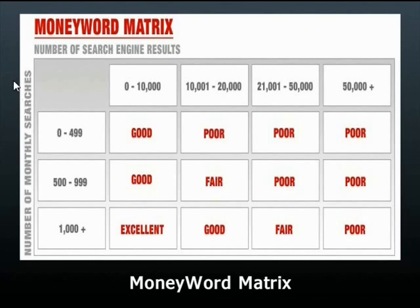If we look over here on the left, we have the number of monthly searches: 0 to 499, 500 to 999, and 1,000 plus. If we look up here at the top, this is the number of search engine results, and I'm going to show you what this is in a sec. We've got 0 to 10,000, 10 to 20, 20 to 50, and 50,000 plus.